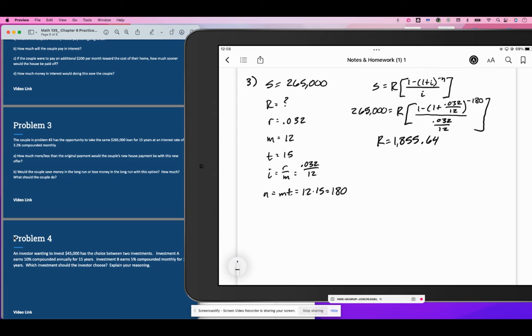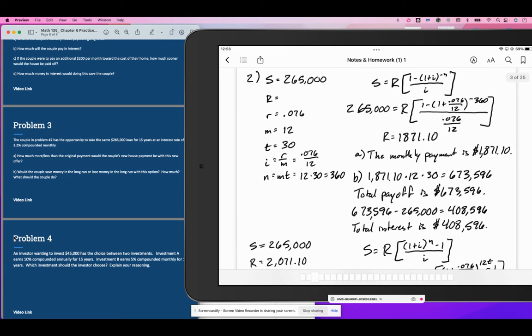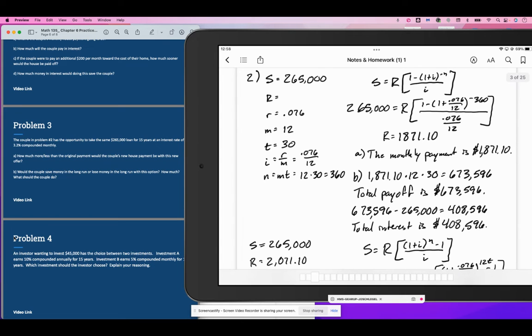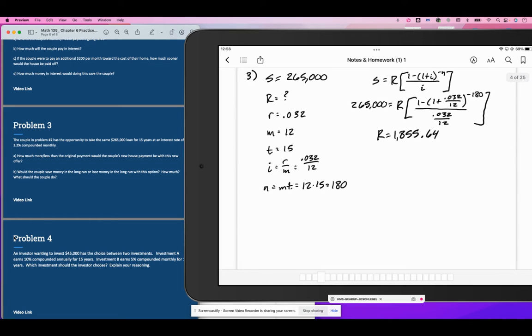The question is how much more or less than the original payment is this loan. The original payment was $1,871 and the new payment is $1,855, so this new payment is actually about $15 cheaper. The loan will be done in 15 years, not 30. Would the couple save money in the long run with this option? Let's take a look.